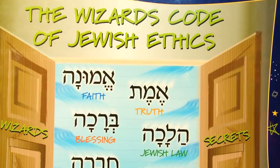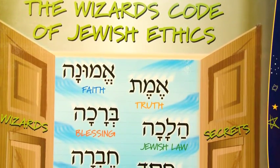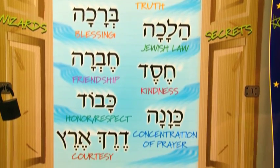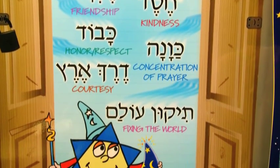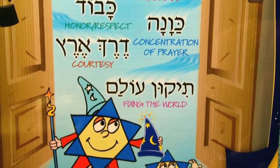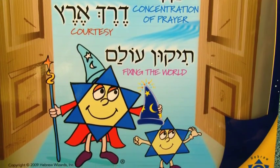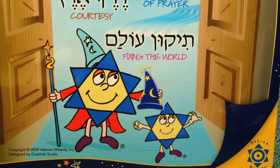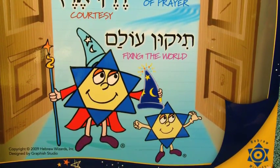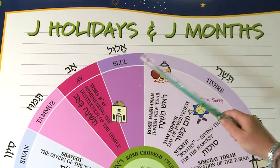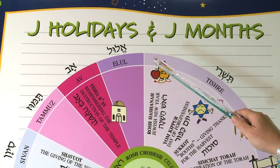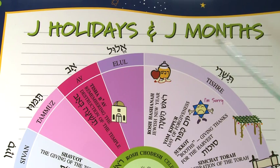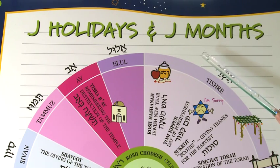Hi. Welcome to Solomon Says, a division of Hebrew Wizards. I'm here to teach you everything that you need to know about being Jewish so that you, too, can become a wizard. Hi. I've created this board just for you: the J Holidays and J Months. J standing for Jewish.